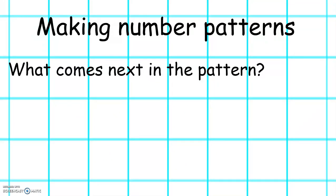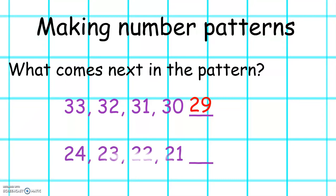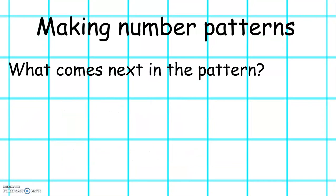Let's look at these number patterns. We've got 33, 32, 31, 30. Now this number pattern is counting backwards. What number is going to be next? Well done. It's 29. And this number pattern: 24, 23, 22, 21. Again, it's counting backwards. Excellent. The next number is 20.